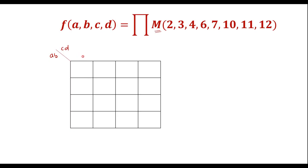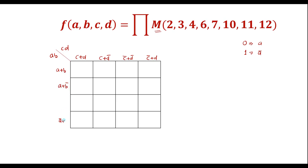In max term, 0 will be used for the normal (direct) variable, and 1 will be used for the complement. For example, for column 00 it will be c plus d; for 01 it is c plus d bar; for 10 it is c bar plus d; for 11 it is c bar plus d bar. Similarly for the rows: a plus b, a plus b bar, a bar plus b, and a bar plus b bar.